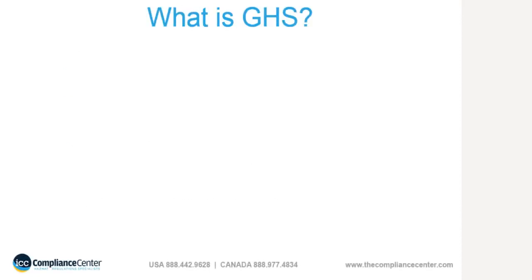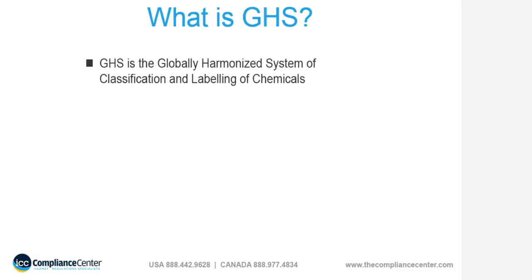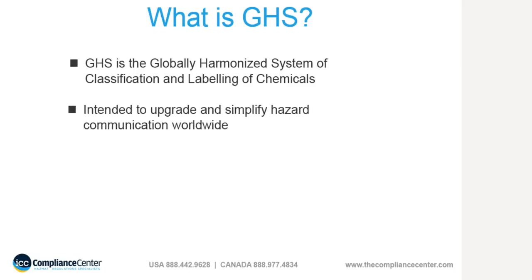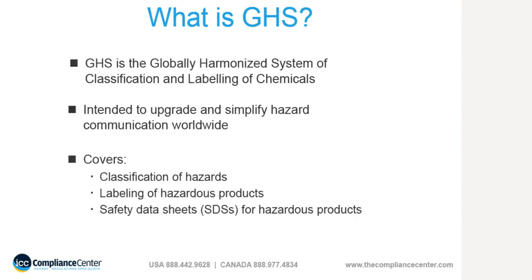What is GHS? GHS stands for Globally Harmonized System of Classification and Labeling of Chemicals. It is intended to upgrade and simplify hazard communication for hazardous products worldwide. It targets workers who handle dangerous substances, consumers who may use them around the home, carriers who transport these substances, and emergency workers who may encounter them while dealing with accidents or spills. The system covers classification of hazards, how to label hazardous products, and safety data sheets or SDSs, which will provide detailed information when labels cannot provide enough.